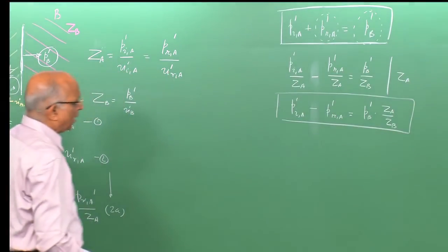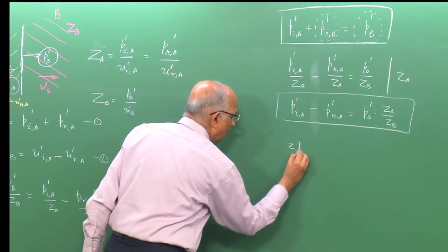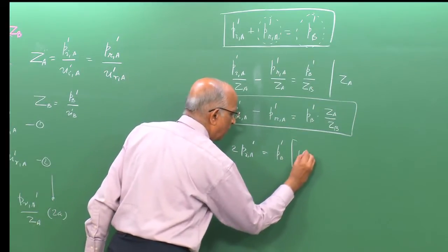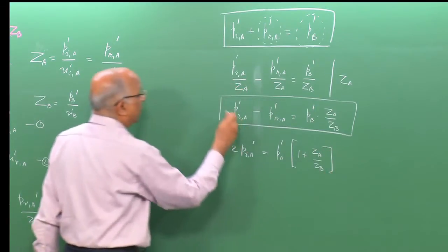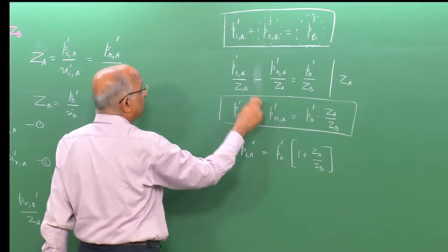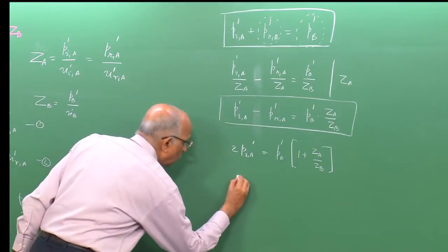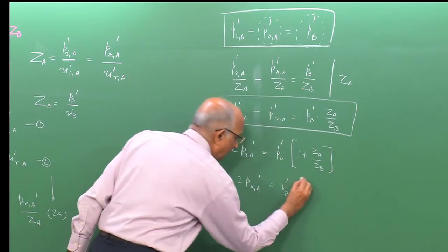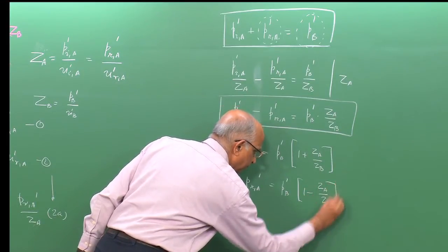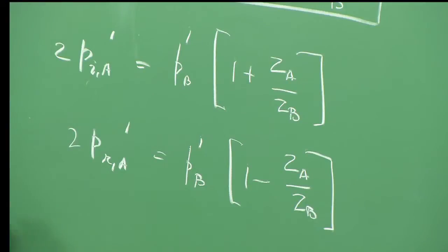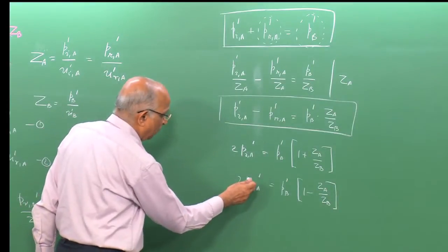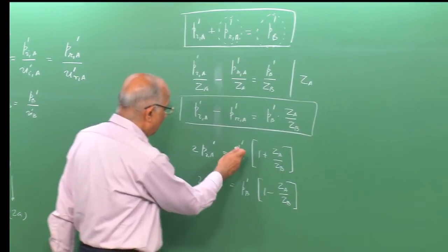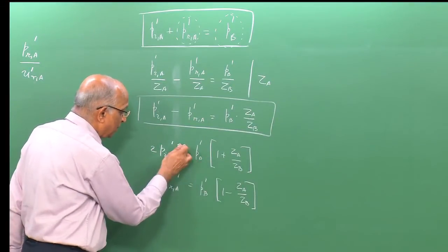Adding equations 1 and 2, the reflected component cancels: 2 p_ia prime = p_b prime × (1 + Z_a / Z_b). Subtracting the equations gives a relation involving (1 − Z_a / Z_b). Now I solve these two equations for the reflected and transmitted pressures.